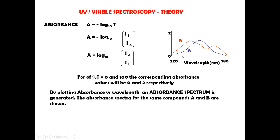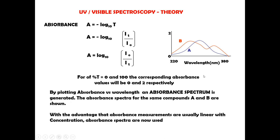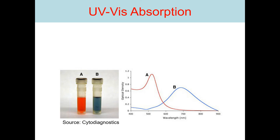A typical absorbance spectrum is shown here. The absorbance spectra for the same compound A and compound B are shown. One key advantage is that absorbance measurements are usually linear with concentration, so absorbance spectra are widely used. UV-visible absorbance essentially gives quantitative measures of color.